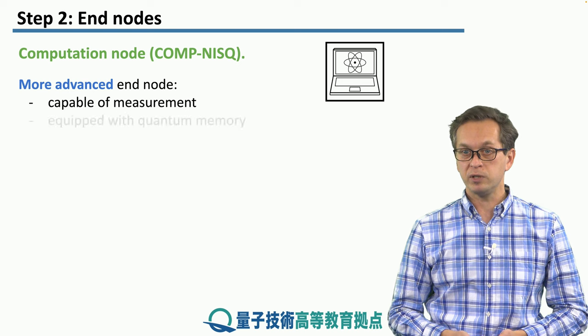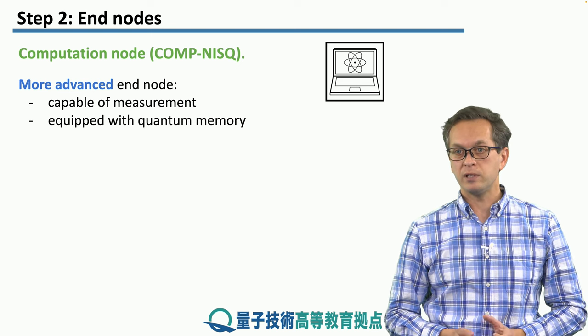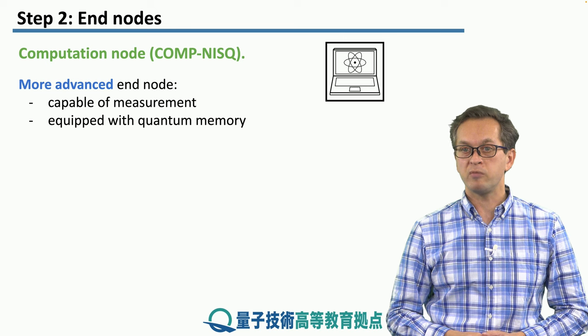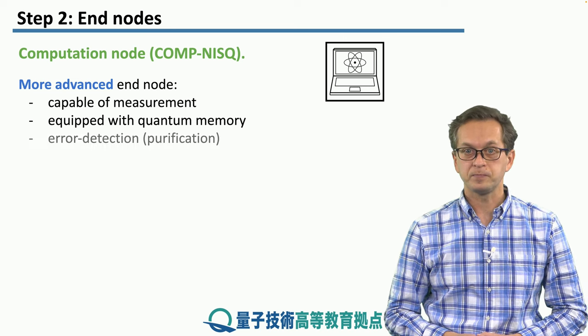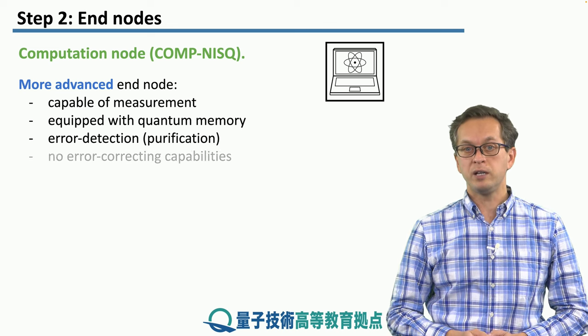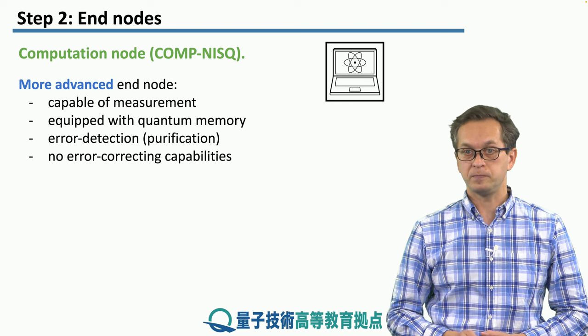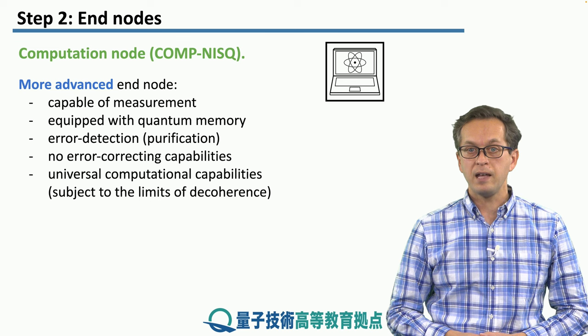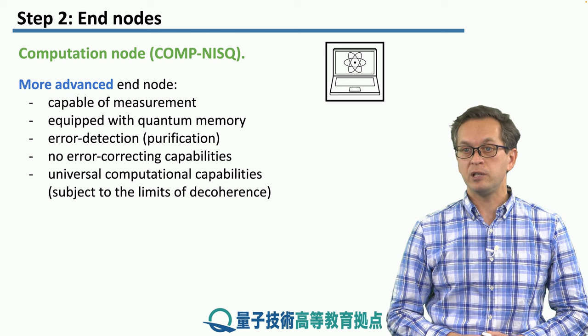It's a little bit more advanced when we compare it to the measurement node. And again, it's capable of measurement, but it's also equipped with a quantum memory. So really, the type of repeater nodes that we have been talking about are very similar to this computational NISC node. It can perform error detection in the form of purification, but it is not equipped with the capability to perform error correction. And it's got universal computational capabilities, but this is subject to the limits of decoherence.